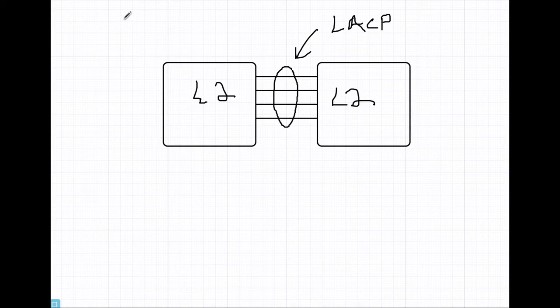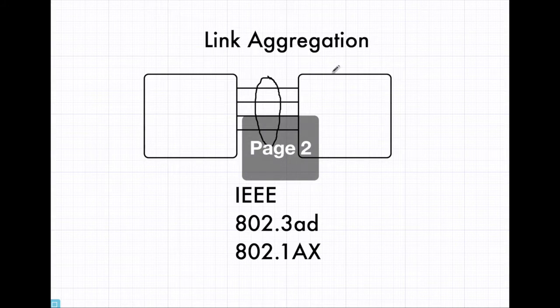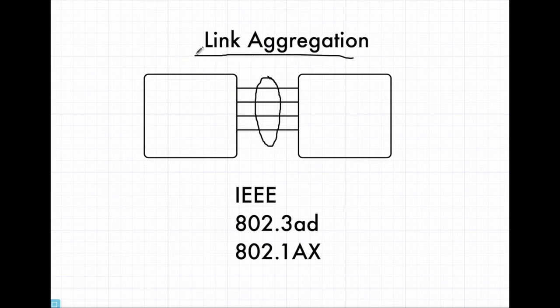So the overall technology for what we're talking about here is called link aggregation. That's when we take multiple links and bundle them together. That's a generic term, an industry standard term coined by the IEEE. The technology is under the 802.1AX working group, although it used to be 802.3AD. And oftentimes you'll see documentation referred to 802.3AD. But this is link aggregation. An individual instance of this is called a LAG, link aggregation group.